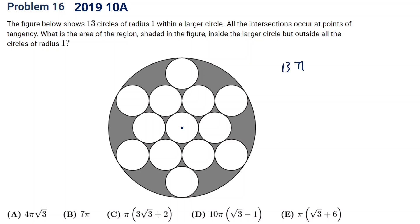For the large circle, we have distances of one and one. Because the circles are all tangent, connecting their centers gives a straight line. So we have a right triangle with sides two, one, and root three. The radius of the big circle will be one plus two root three.